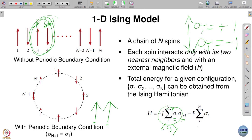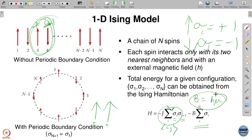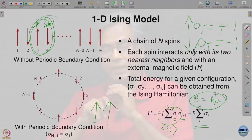This term now represents the external field. B actually contains two terms: the external magnetic field H and the magnetic moment μ, so B = H·μ. This is how the Hamiltonian is written. It is a very simple Hamiltonian — it just takes into account certain favorable interactions and certain unfavorable interactions. Then one attempts to solve it and see what results come out.